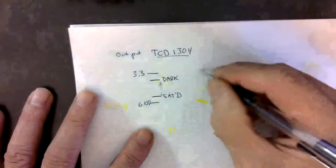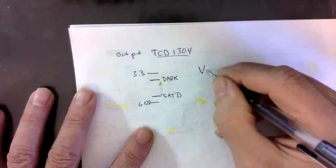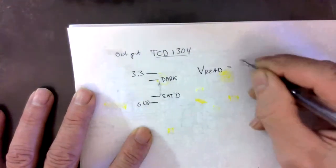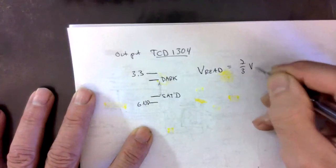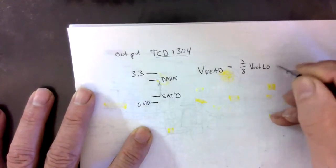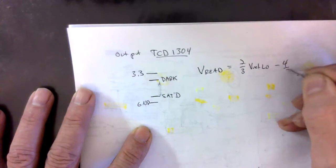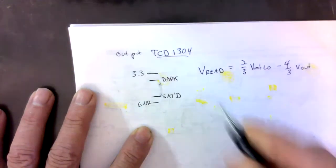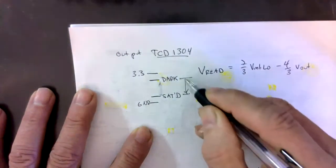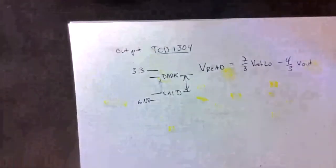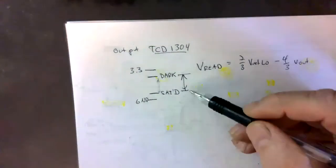We said that V read is 7 thirds V ref low minus 4 thirds V out, and V out can be anywhere between these two.